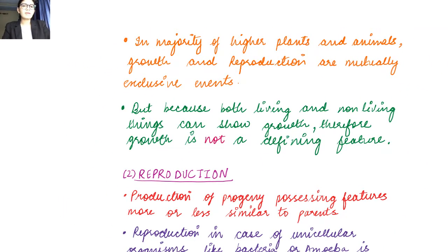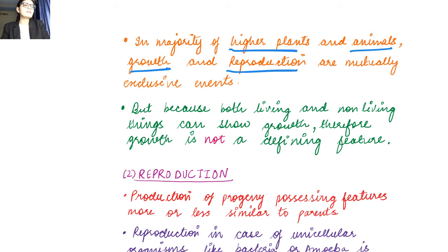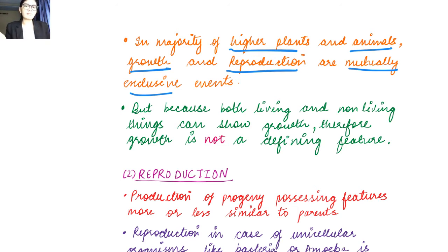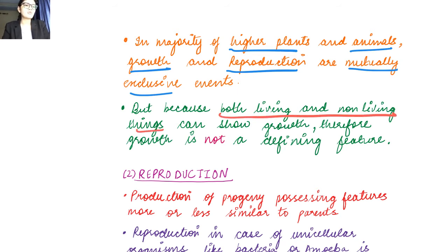In a majority of higher plants and animals, growth and reproduction are mutually exclusive — they have nothing to do with each other. But once again, because both living and non-living things can show growth, growth is not a defining feature.